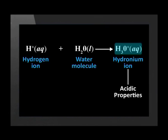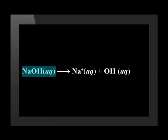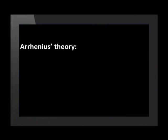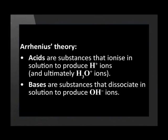It is the presence of the hydronium ions that give acids their acidic properties. The H⁺ ion and the H₃O⁺ ion are really one and the same thing, and therefore acids can be explained by the presence of H⁺ or H₃O⁺ ions in solution. A base such as sodium hydroxide dissociates in water according to this equation, and it is the presence of OH⁻ ions that give bases their properties. So according to Arrhenius' theory, acids are substances that ionize in solution to produce H⁺ ions and ultimately H₃O⁺ ions, and bases are substances that dissociate in solution to produce OH⁻ ions.